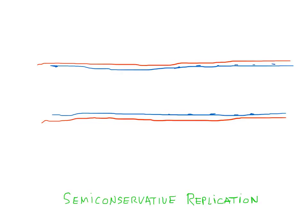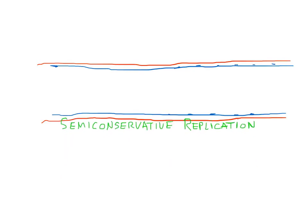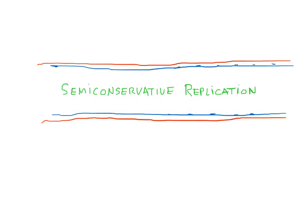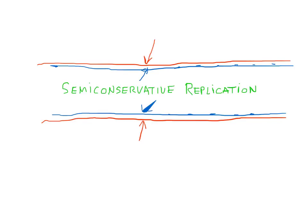This method, in which one of the strands remains old, is called semi-conservative replication. Semi-conservative in that one strand is old but one is new.